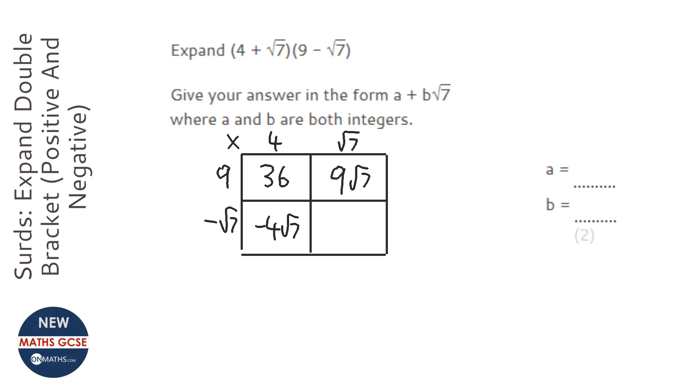Well, first of all, a positive and a negative make a negative. And root 7 times root 7 is root 49, which is just 7.